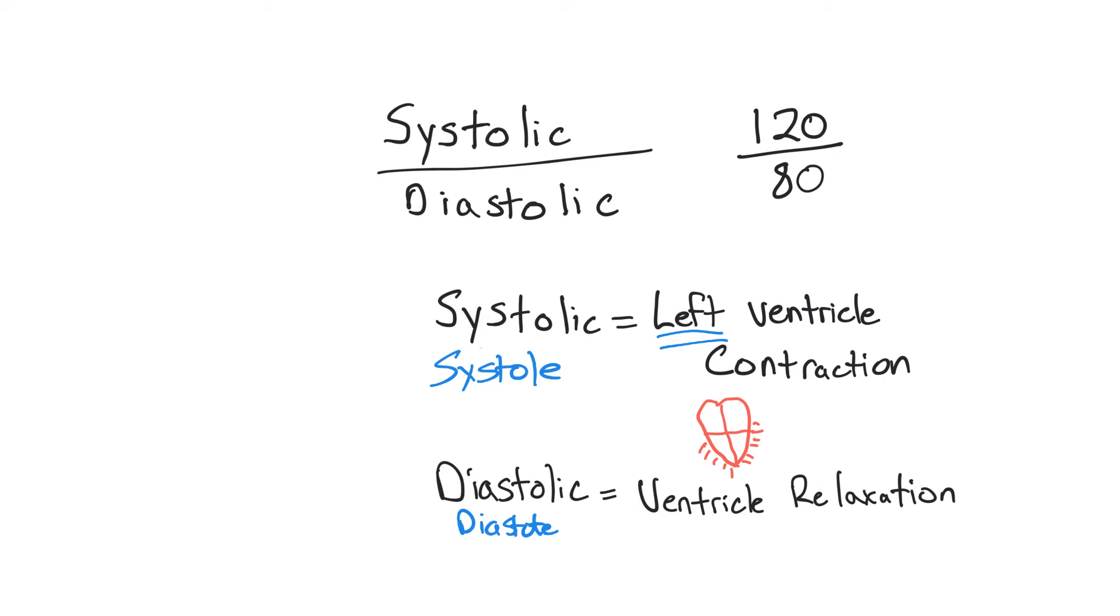So the higher the diastolic blood pressure, the more constricted or narrow the peripheral or systemic vascular circulation is. So, talking diastolic here.